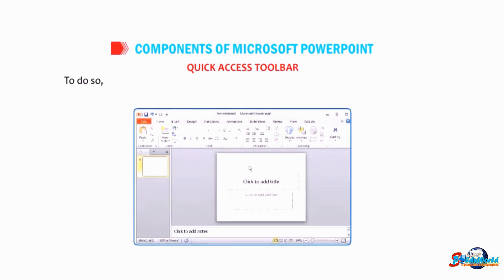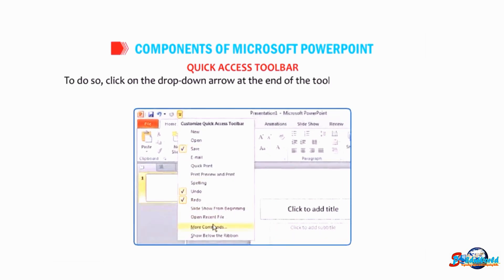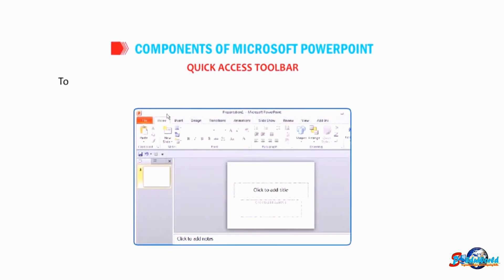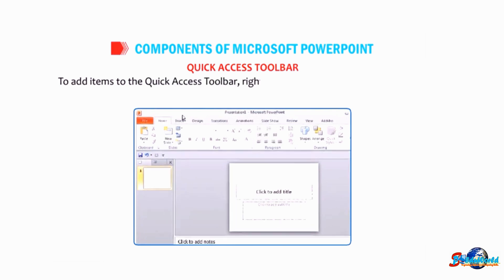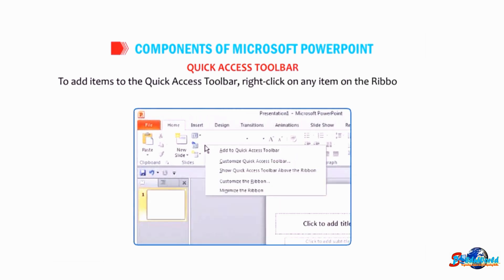To move the Quick Access Toolbar, click on the drop-down arrow at the end of the toolbar and select the 'Show Below the Ribbon' option. To add items to the Quick Access Toolbar, right-click on any item on the ribbon and click on 'Add to Quick Access Toolbar'.